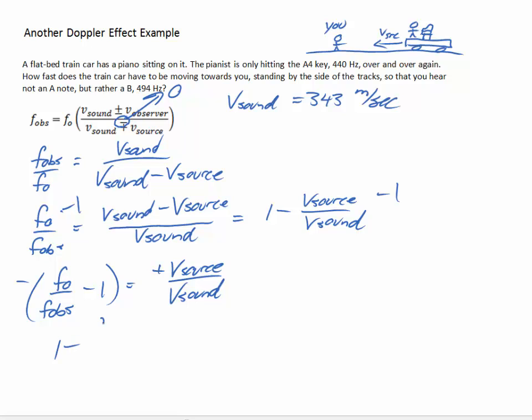And lastly, we can multiply both sides by V_sound to get our final result. That V_source, and I'm going to write the thing we're looking for on the left-hand side, is V_sound times 1 minus F0 over F_obs.